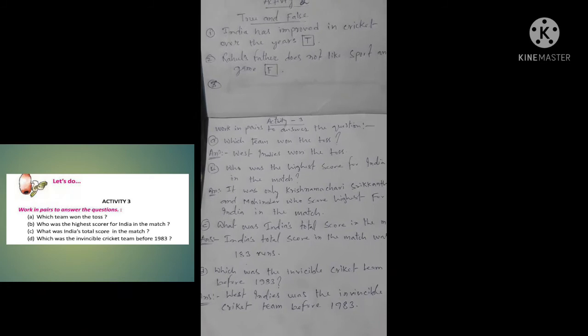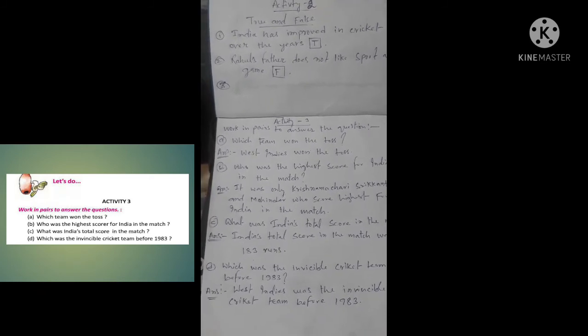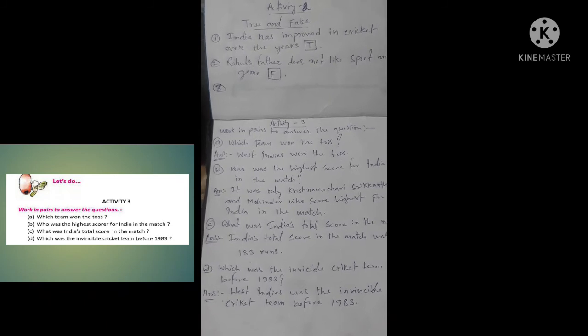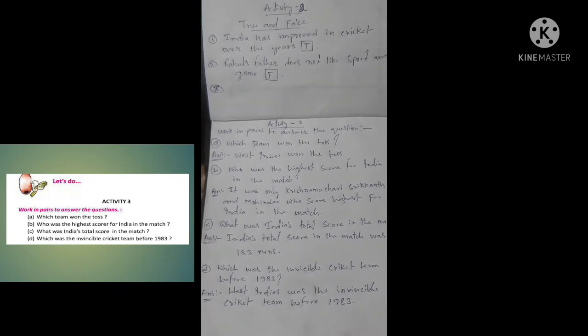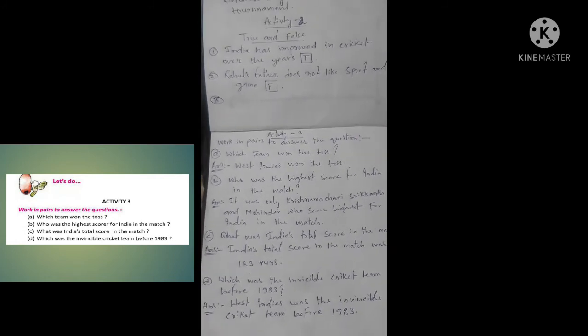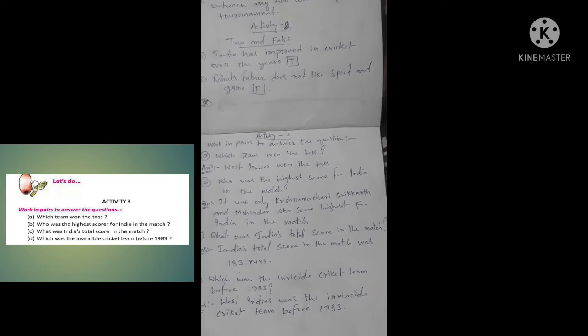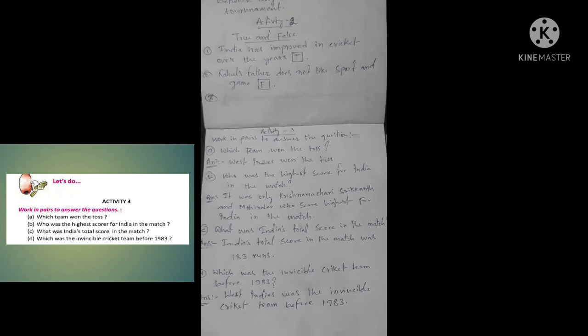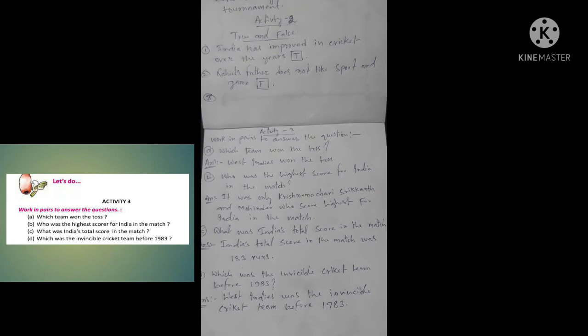Answer: It was Krishnamachari Srikant and Mohinder who scored highest for India in the match. C: What was India's total score in the match? Answer: India's total score in the match was 183 runs.